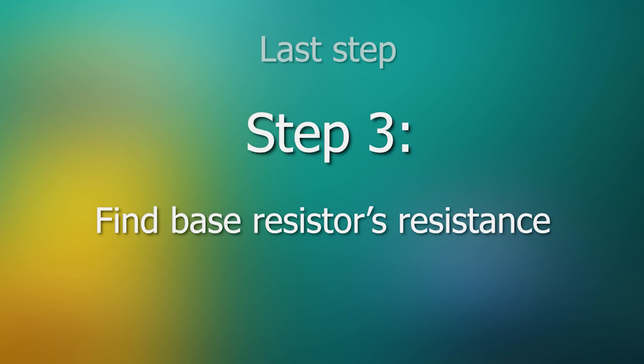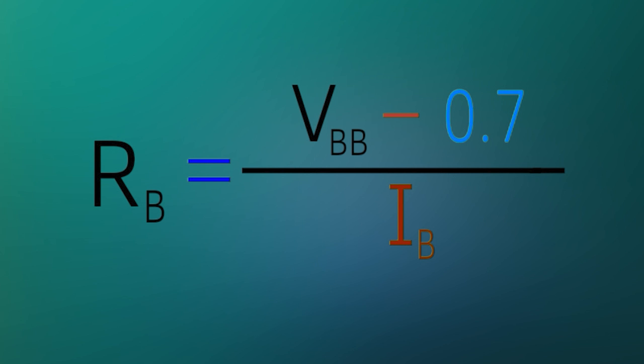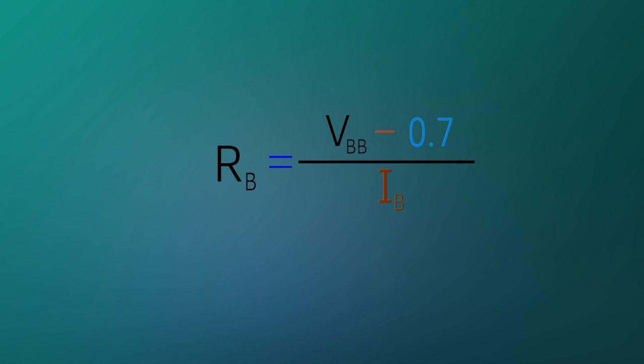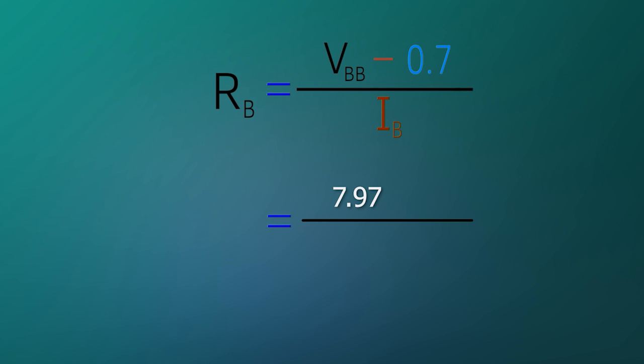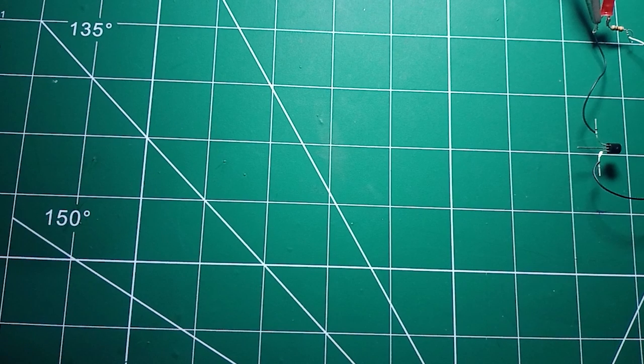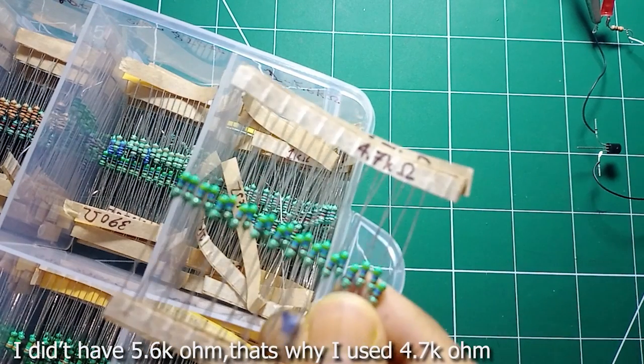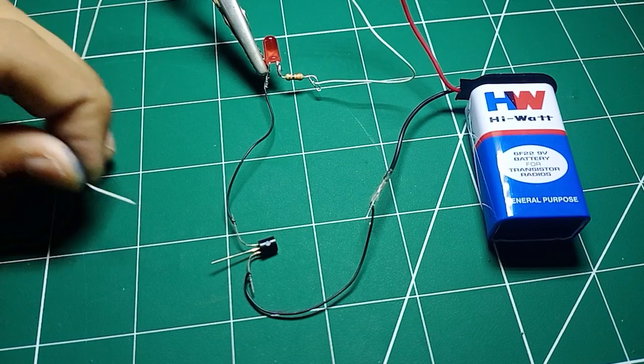Now the last step, step 3 is to find base resistor's resistance. RB is equal to VBB minus 0.7V divided by IB. The battery voltage we found is 7.97V which is VBB, and the base current we found was 1.25 milliamperes. So the value of base resistance equals 5,816 ohms. The closest resistance value I got is 4.7 kiloohm resistor. So by connecting this, I can control the LED.